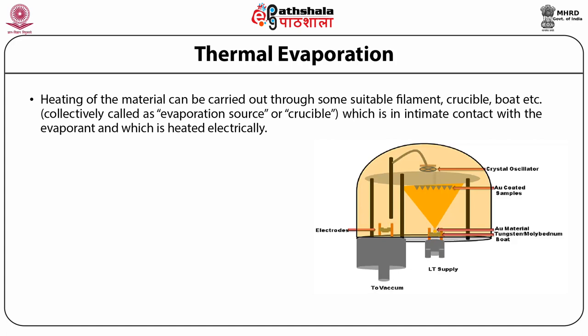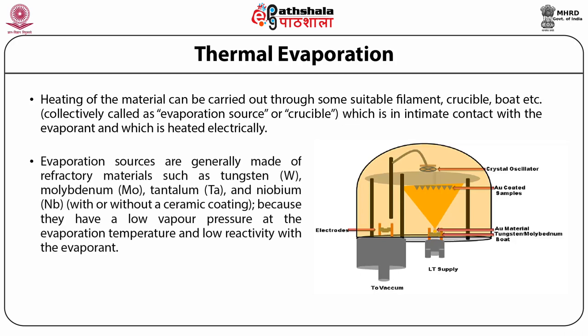Heating of the material can be carried out through some suitable filament, crucible, boat, etc., which are collectively called as evaporation sources, and are in intimate contact with the evaporant and heated electrically. Evaporation sources are generally made of refractory materials such as tungsten, molybdenum, tantalum, and niobium because they have a low vapor pressure at the evaporation temperature and low reactivity with the evaporant.